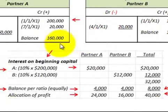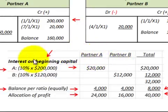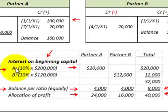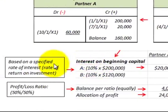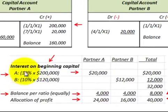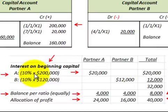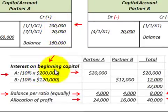Let's look at our calculation table here between partner A and partner B — looking at the interest on the beginning capital amounts. For partner A, we have a 10% interest rate — that's the specified rate of return on the investment the partners agreed on. We take 10% times the beginning-of-year capital balance. For partner A, that was $200,000, so partner A would be allocated $20,000.